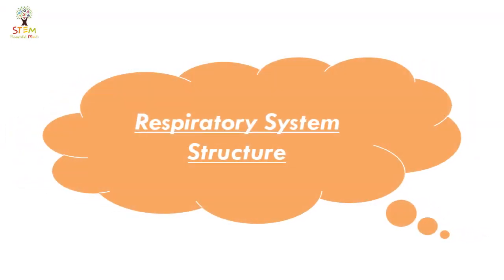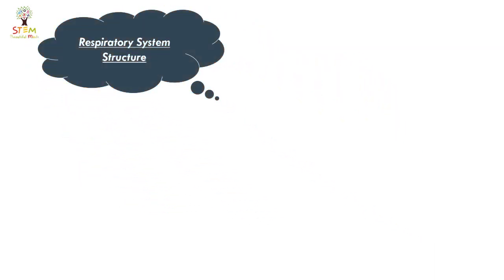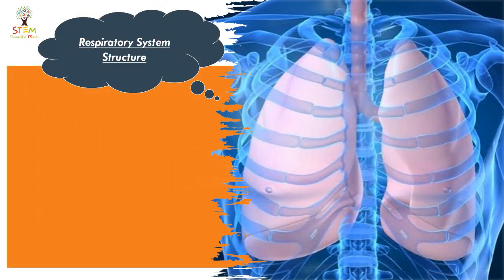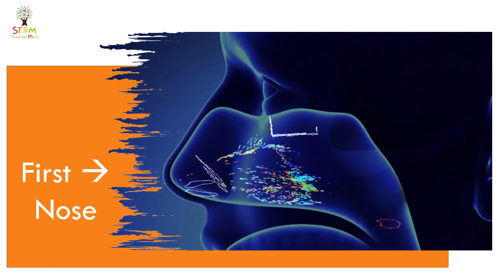What is the respiratory system structure? What are the organs that form the respiratory system? Let's follow the air passage. The first organ of the respiratory system is the nose. The air enters the body through the nose.